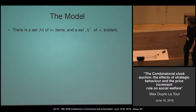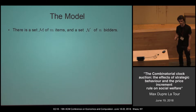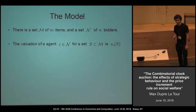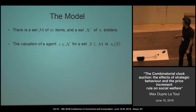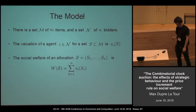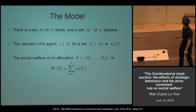Now I want to be a little more precise with the model. We have a set of M items and bidders. For every subset of items and every agent, we have a valuation V_i(S). The welfare of an allocation is just the sum of the valuations of each bidder.